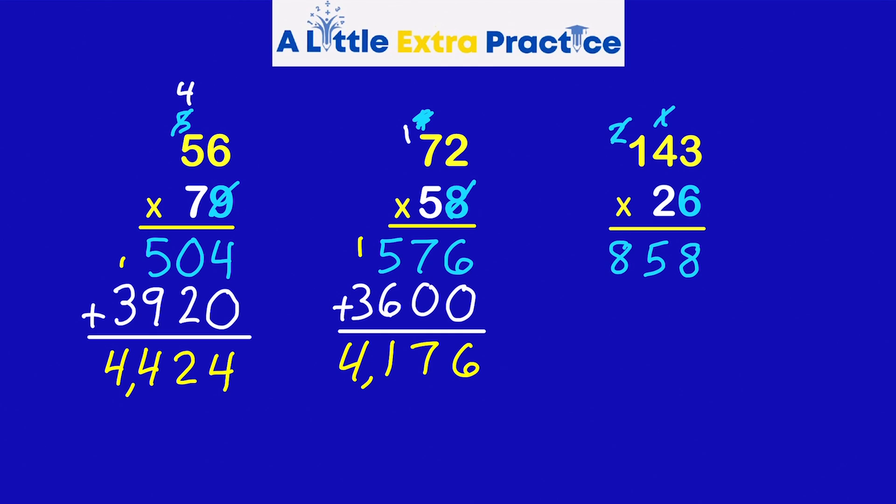Okay, I'm going to cross these off so I don't accidentally reuse these. Now I'm going to take 143 times 20. So I'll put the 0 of 20 here. And I will multiply with the 2 and the tens.